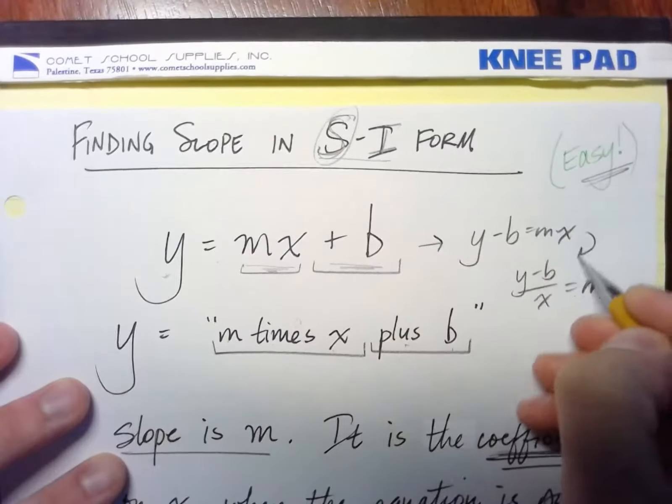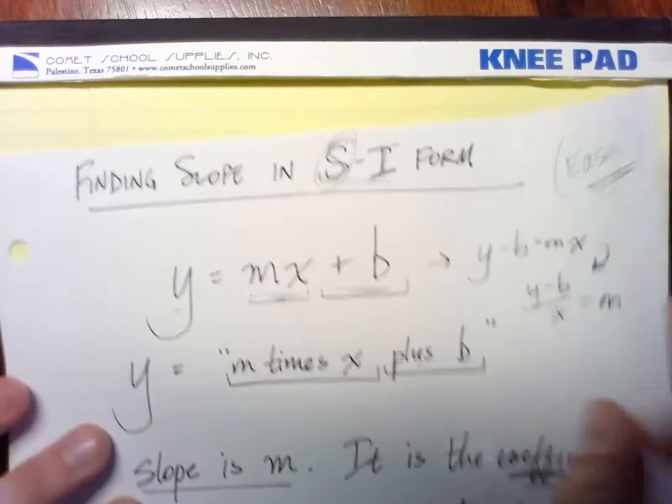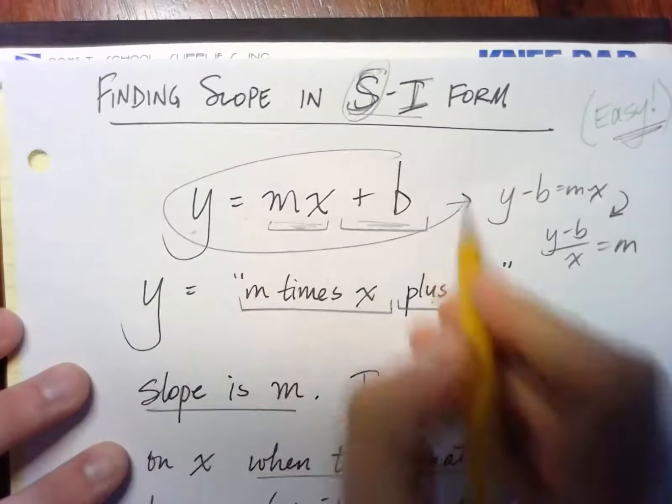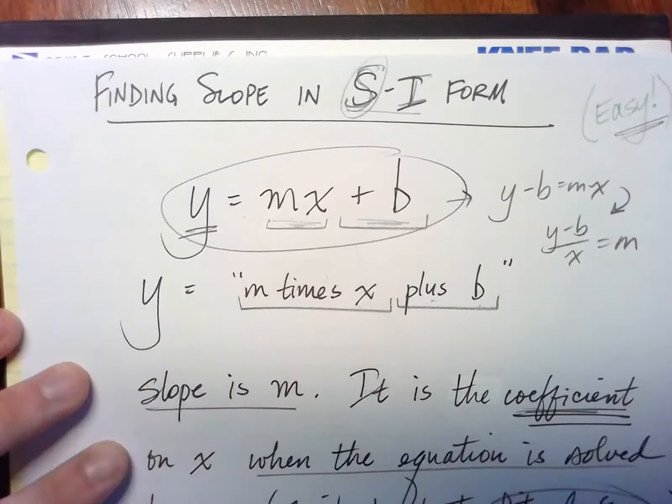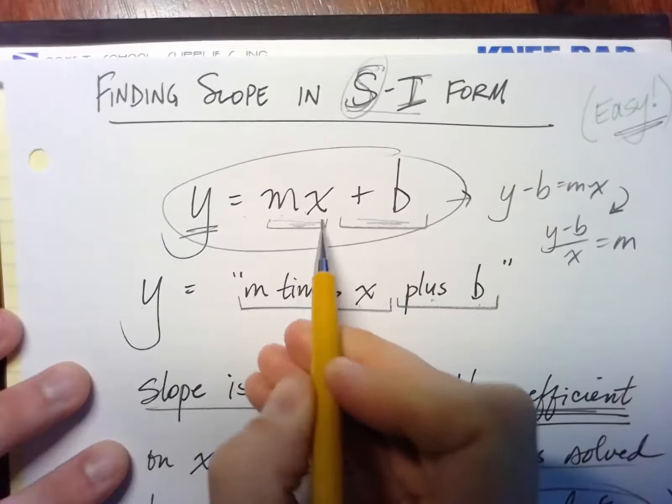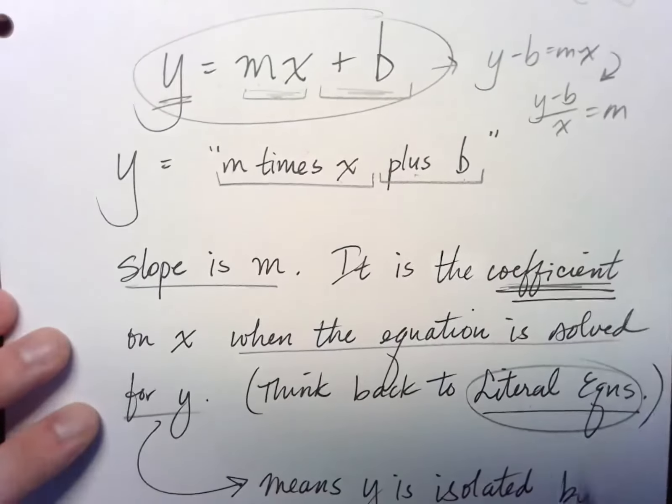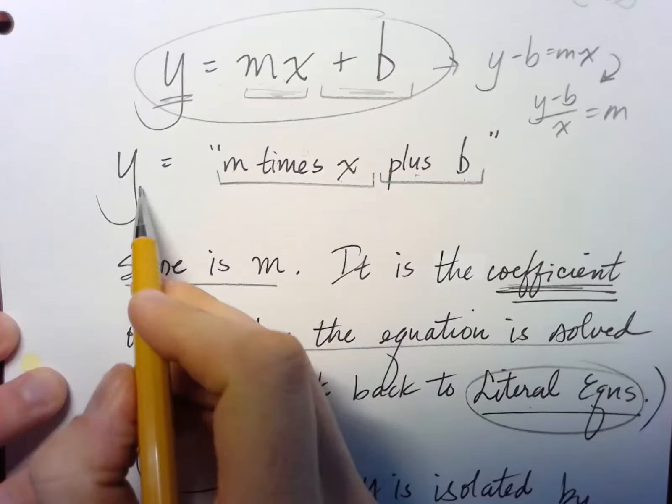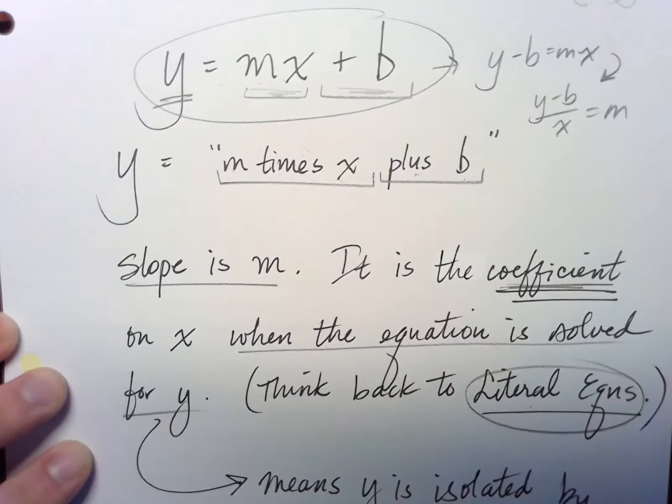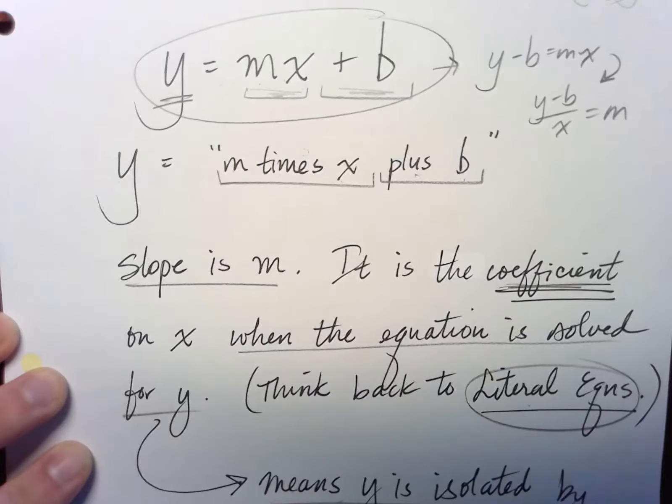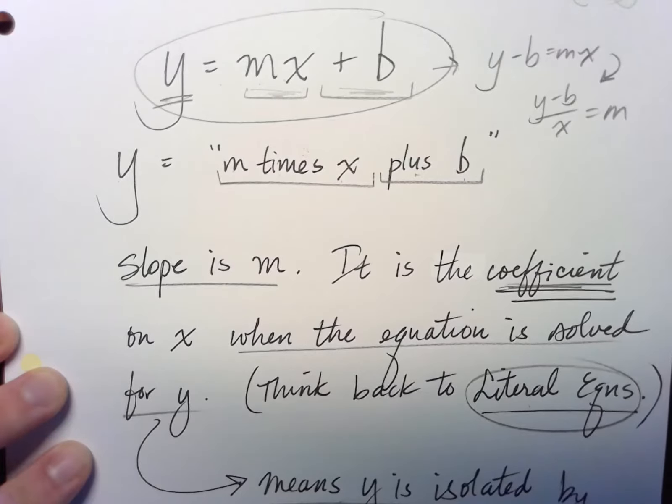I mean, I can do all kinds of useless stuff with this, but ultimately, if I have this, if I have y by itself, then I have the m times the x, and the m is the coefficient. I've isolated the y by itself on the one side of the equal sign. So it means y is isolated by itself on one side of the equal sign.